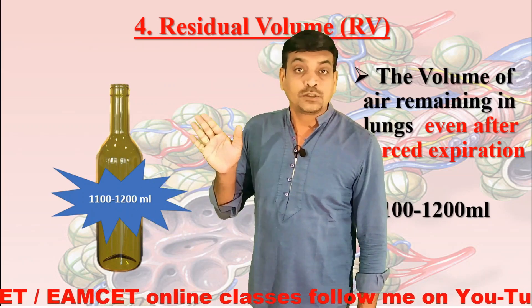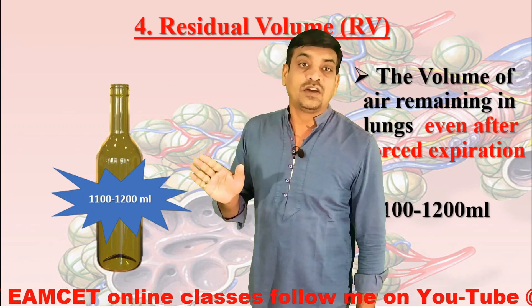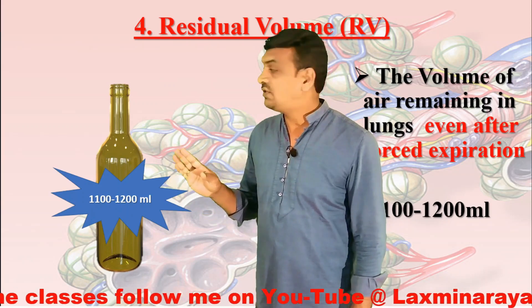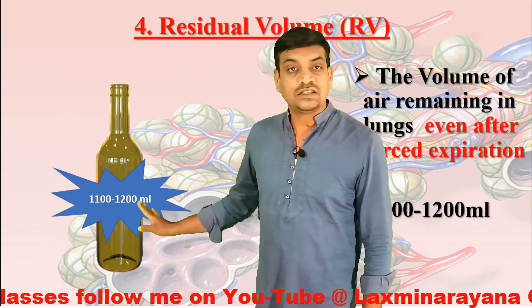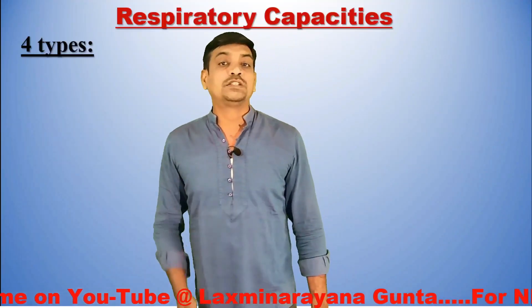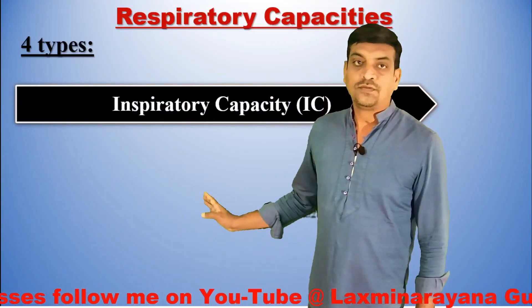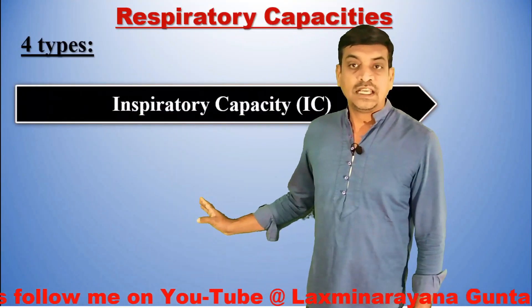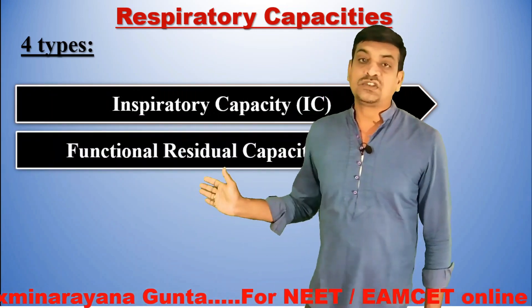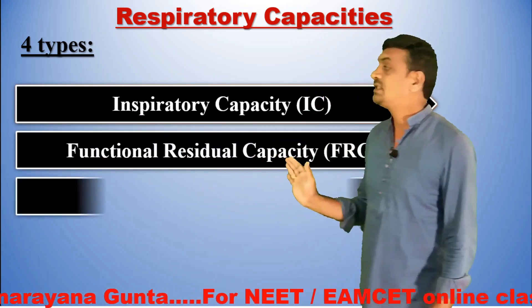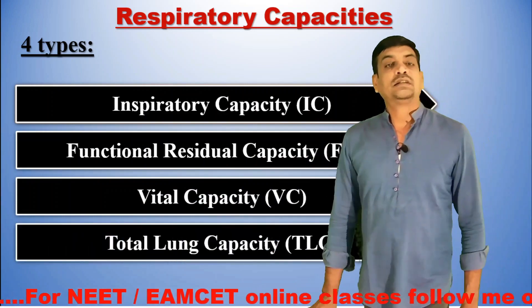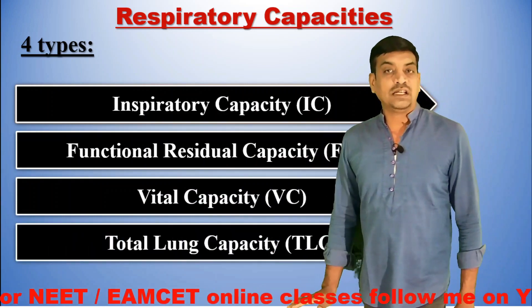Whereas the expiratory reserve volume is 1000 to 1100 ml and the residual volume is 1100 to 1200 ml. Coming to the next one: the respiratory capacities. The first one is inspiratory capacity, the second one is functional residual capacity, the third one is vital capacity, and the last one is total lung capacity.